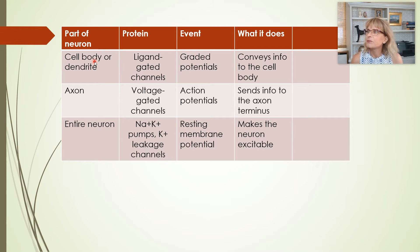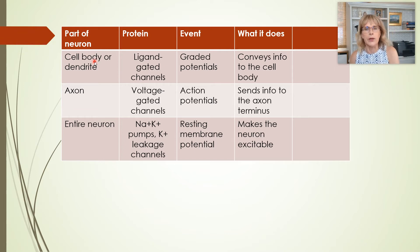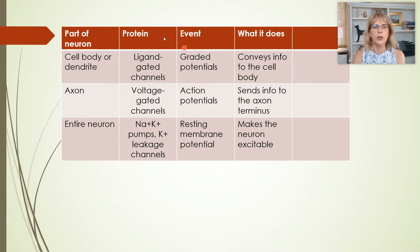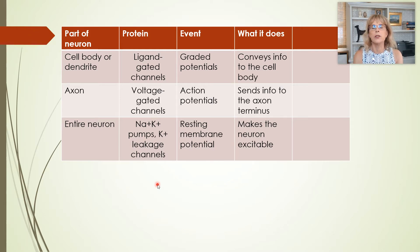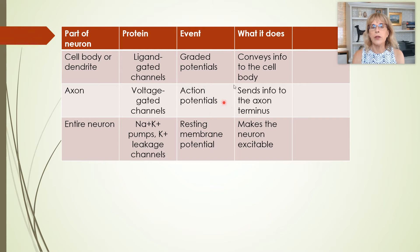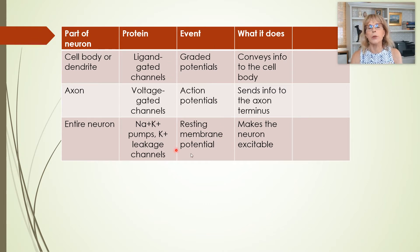It's kind of like if I had a refrigerator in one room and an oven in the other room — I can only refrigerate things in the room where the refrigerator is, and I can only cook things in the room where the oven is. And since the resting membrane potential happens all over the cell, the sodium-potassium pumps and potassium leakage channels are found all over the cell.